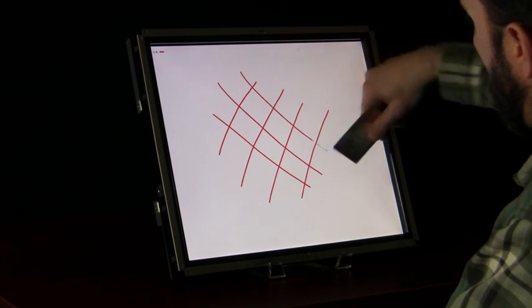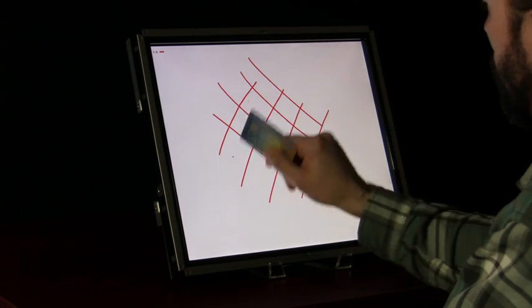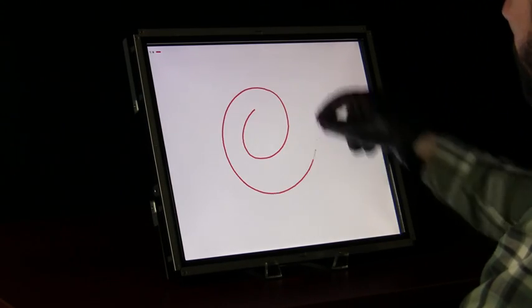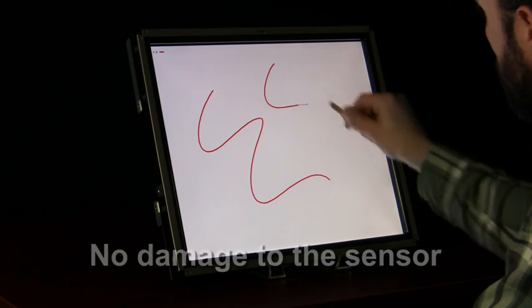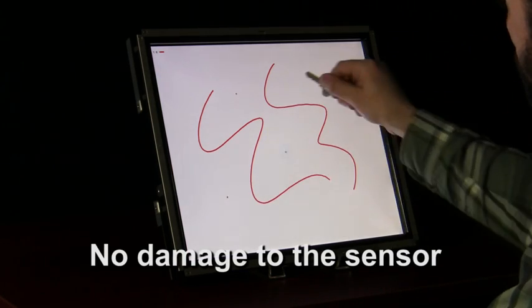First, we don't have the just-right touch requirements that limit other technologies. Gloved hands, credit cards, metal pens, bare fingers or the tip of a screwdriver are all recognised as touch without inflicting damage to the sensor.